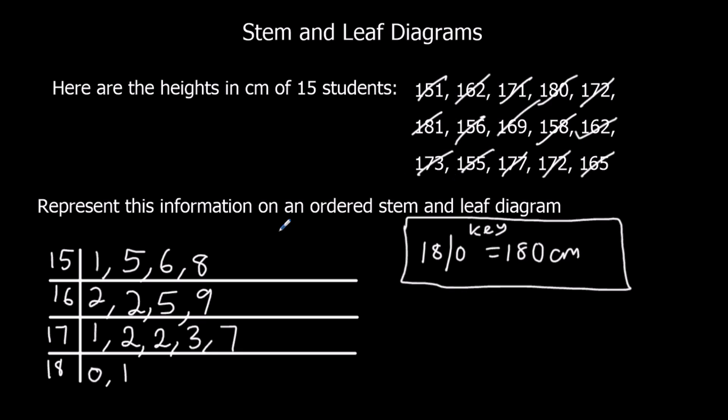So they're all crossed off - that's a good sign. There should be 15: 1, 2, 3, 4, 5, 6, 7, 8, 9, 10, 11, 12, 13, 14, 15. I've got my key, everything's in order. That's done.